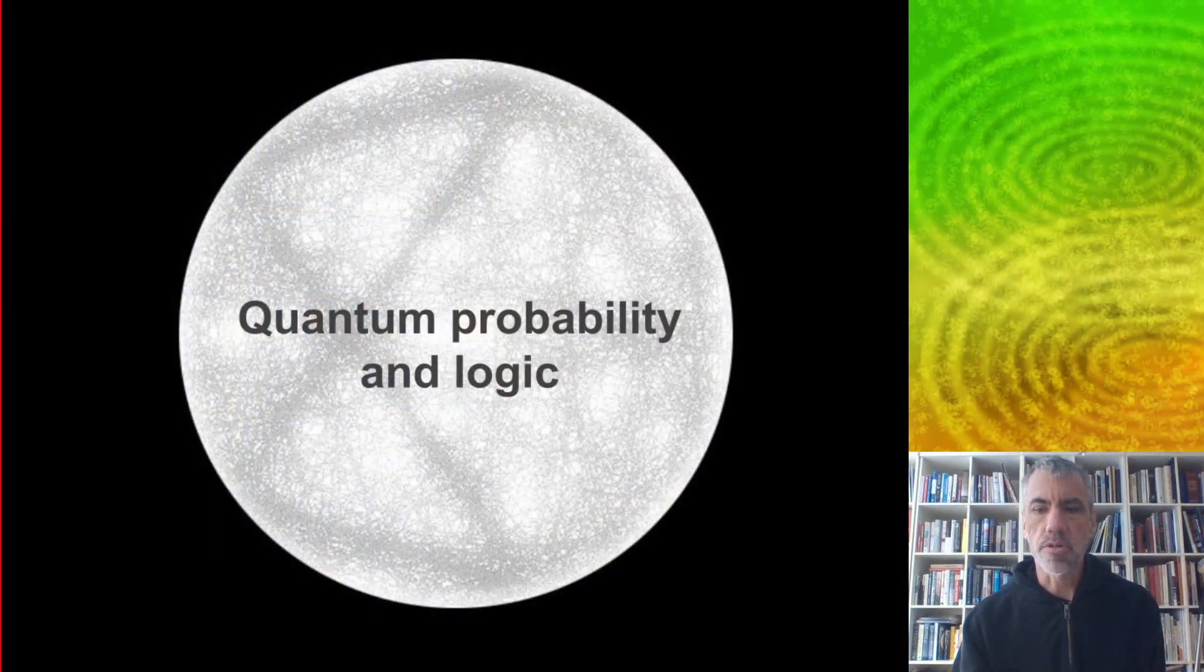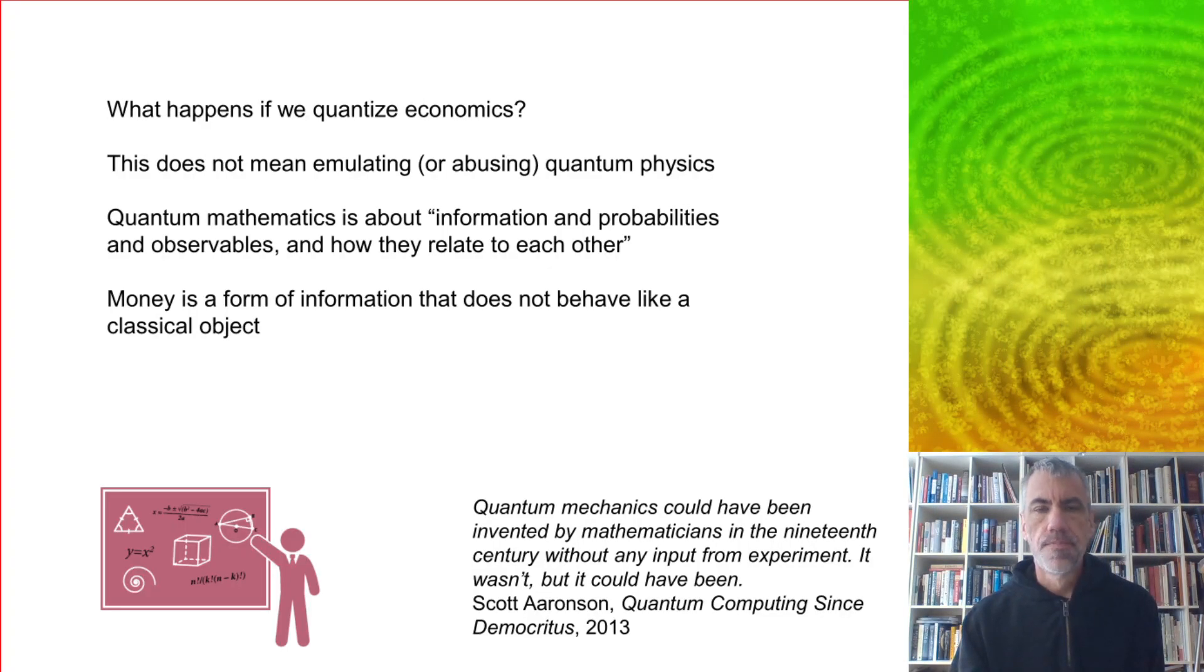Let's talk about quantum probability and logic, which are the core of the quantum approach. So what does it mean when we say we want to quantize economics? It doesn't mean that we're emulating or somehow abusing quantum physics. Quantum mathematics is about information and probabilities and observables and how they relate to each other, as Scott Aronson said. And money is a form of information that does not behave like a classical object.